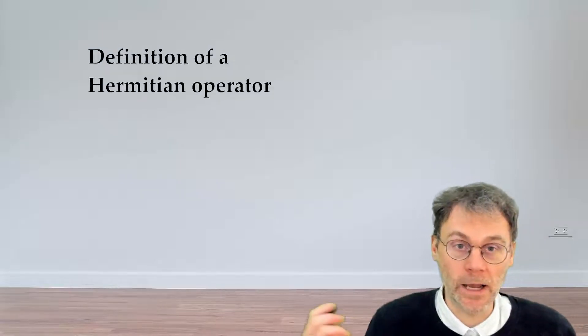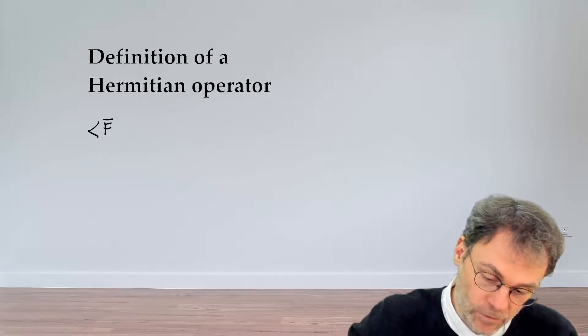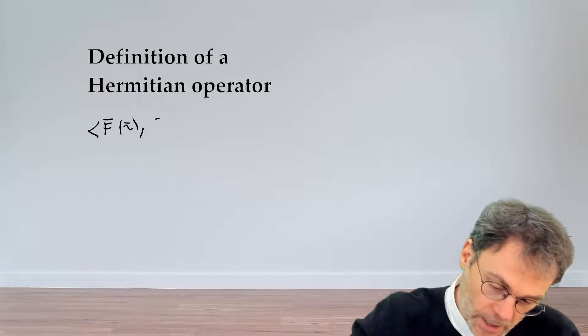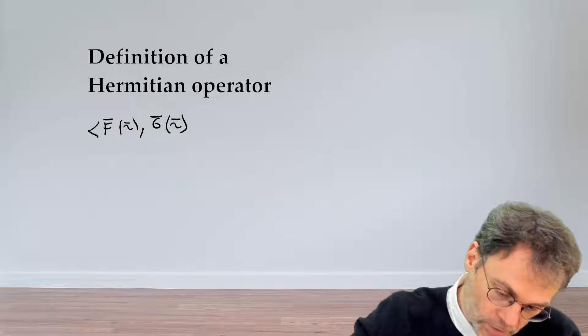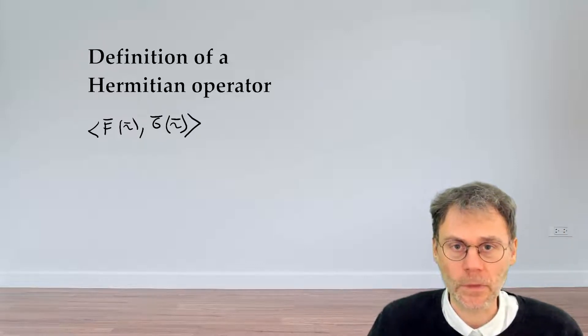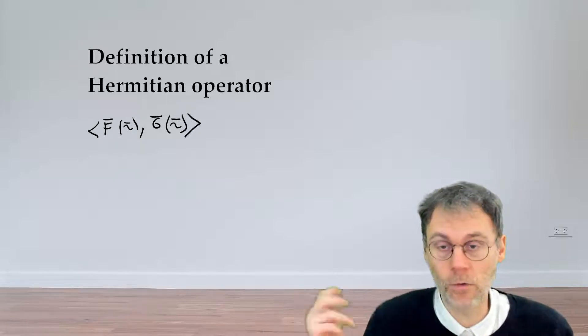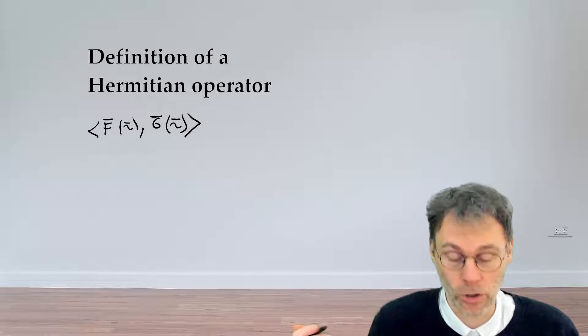We need to define the scalar product between two vector functions. So say you have a vector function f, and you take the scalar product with a different guy, g of r. How could you define this scalar product? Now you know the scalar product between two vectors, but how will you generalize that to vector functions?